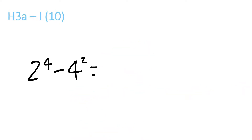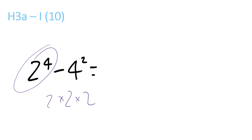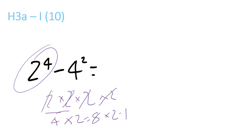This one — no minuses, that's not confusing. 2 times 2 times 2 times 2, because it's got the 4. So 2 times 2 is 4, times 2 equals 8, times 2 equals 16. So 16 minus 4 times 4 — because it's 4 times itself — minus 4 times 4 equals 16, equals 0.